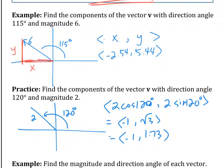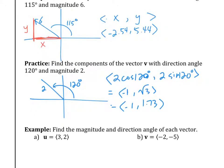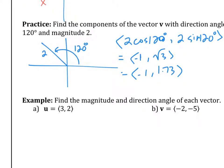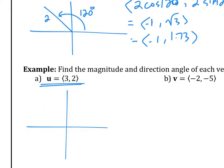Now we're going to go backwards. I'm going to give you a vector, and you're going to figure out the magnitude and direction. This is very easy if you remember what we did two chapters ago. The u vector is 3, 2. I want you to draw this vector. It starts from 0, 0 and ends at 3, 2. Now you need to figure out the magnitude first — that's a little easier. How long is this vector? Use the Pythagorean theorem. Go ahead and figure out the magnitude of u.